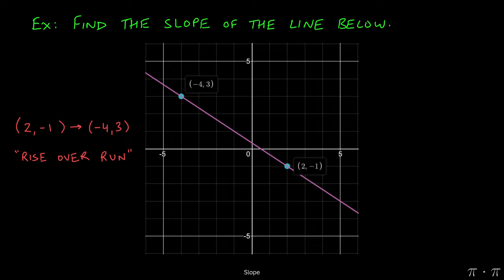Now let's say we had decided to go in the opposite direction. Let's say we started at 2 comma negative 1, and we moved up to negative 4 comma 3. The slope is still given by the same relationship, rise over run.